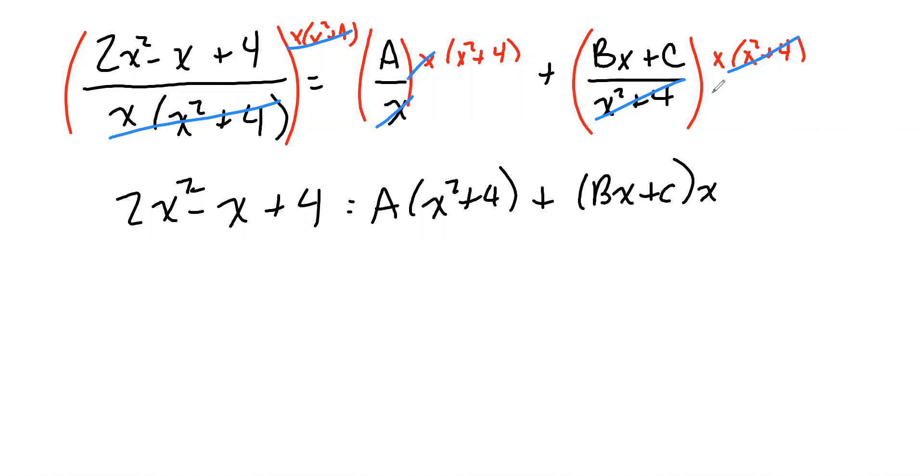And even worse, the irreducible quadratic factor, x² + 4, is never going to equal 0, no matter what value we substitute for the x. Well, no matter what real value we would substitute for the x. However, I can make this factor equal to 0 by letting x equal 0. So let's start there.